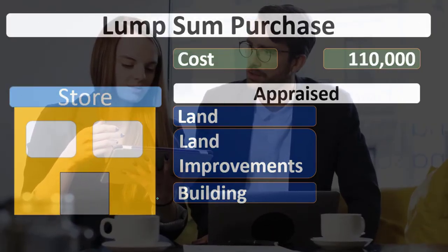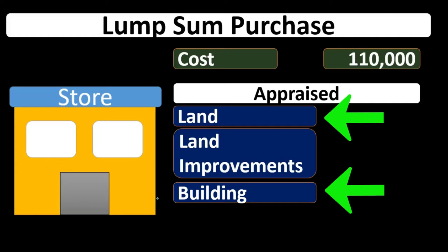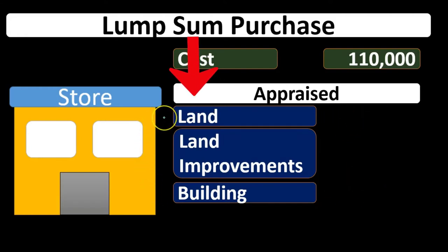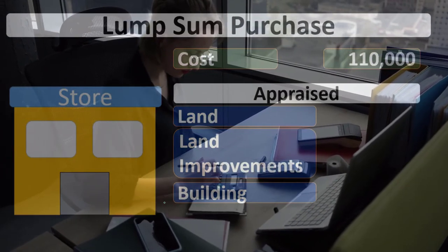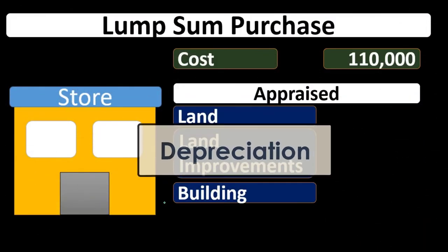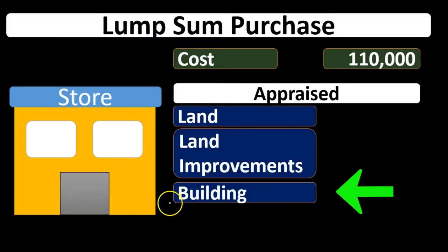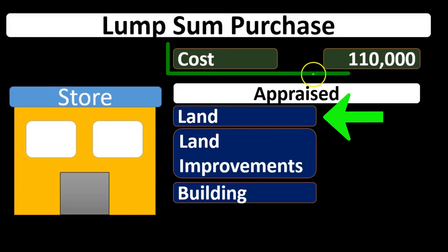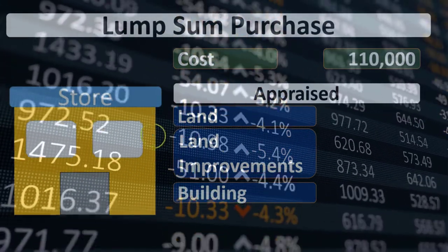That's a significant difference, so it really depends on what our objective is when we make this allocation. We want to be as objective as possible, but from the perspective of the company, if you want it to look better, you'd probably want land to have more of the allocation, because the building is going to deteriorate over time — it will decline in value on the balance sheet, and we'll record depreciation expense, bringing down net income. On the other hand, if we want to make net income smaller for tax purposes, we might want more allocated to building, since the building will be depreciated and bring down net income, whereas land will not.